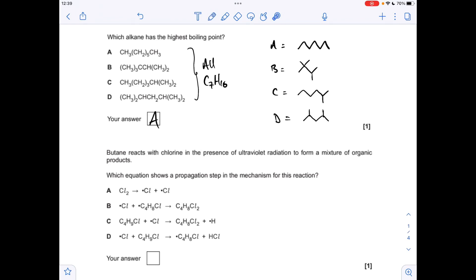Moving on to the next question, which shows a propagation step in the mechanism for the reaction between butane and chlorine? Well it's definitely not A, because that's an initiation reaction. It's definitely not B, because that is a termination reaction. So that leaves us with C and D, and these equations have a similar sort of feel to them, because they are both molecule, radical, molecule, radical.